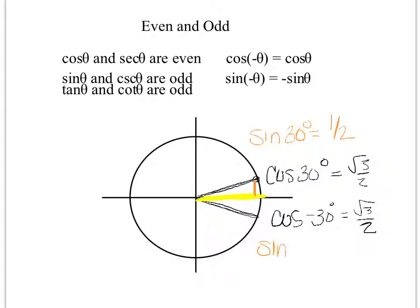But if I want to know the sine of negative 30 degrees, it's still going to be that 1 half. But now if you look, I'm in the negative section of the y-axis, so this will be a negative 1 half.